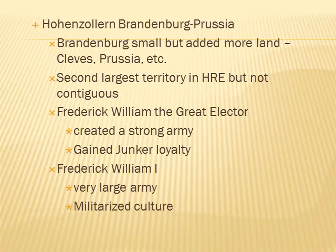The Hohenzollern family controls Brandenburg-Prussia. Brandenburg starts out small but adds a lot of land — Cleves, Prussia, and various other territories — ending up as the second largest territory in the Holy Roman Empire, though it is not contiguous, meaning it has patches of land not connected together. Frederick William the Great Elector created a strong army and gained the loyalty of the Junkers, the nobility. Frederick William the First had a very large army and militarized the culture — hence the famous quote that in Prussia the military has a country, not the other way around.